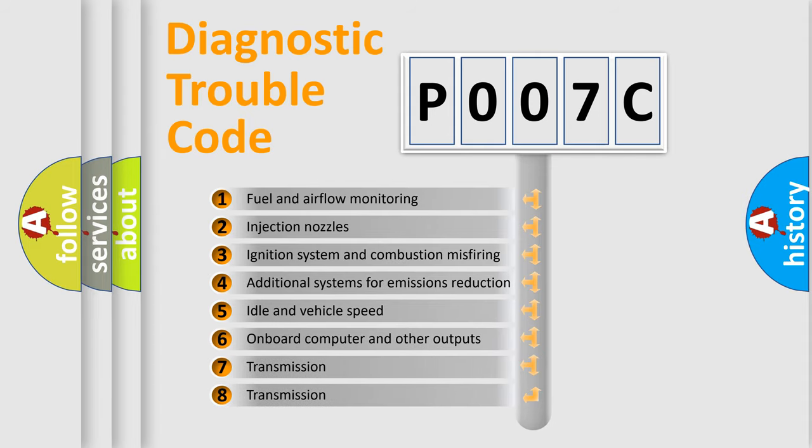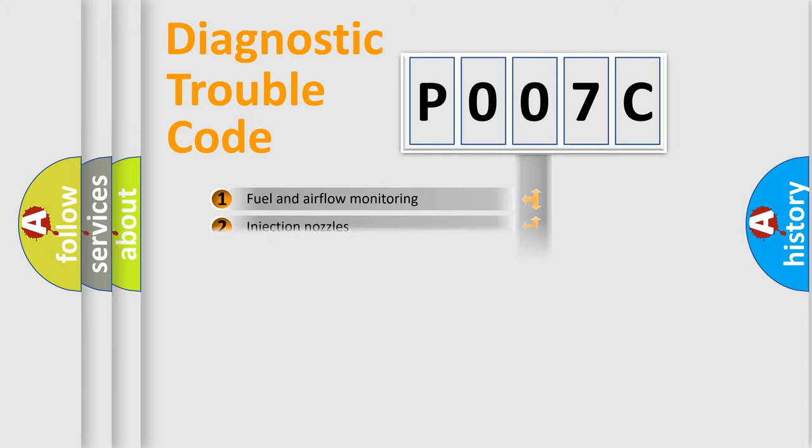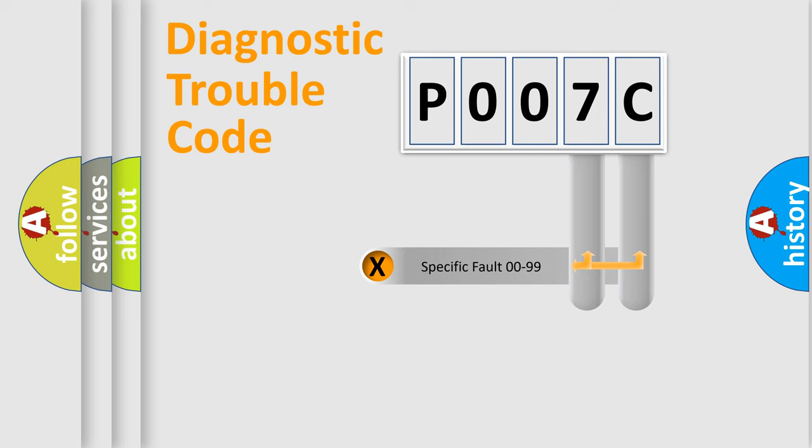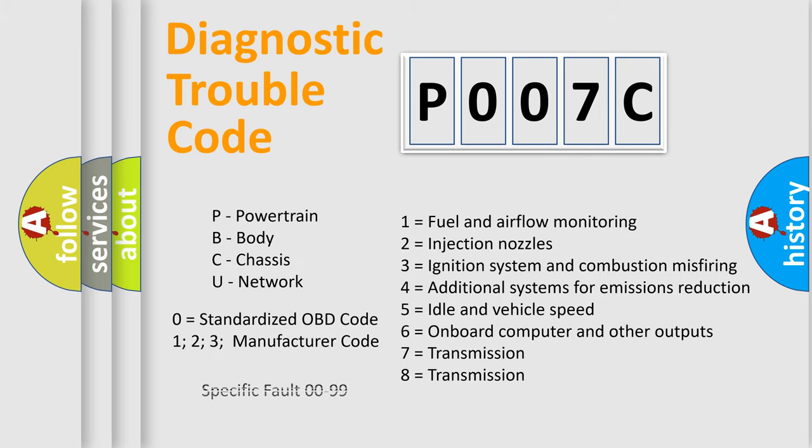The distribution shown is valid only for the standardized DTC code. Only the last two characters define the specific fault of the group. Let's not forget that such a division is valid only if the second character code is expressed by the number zero.